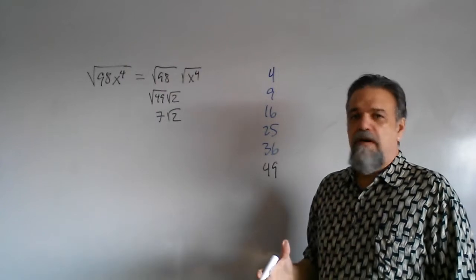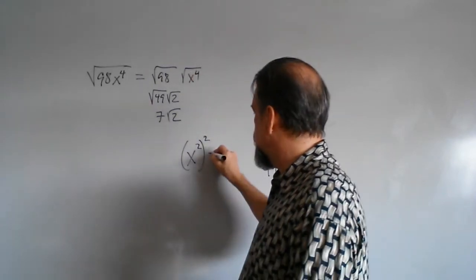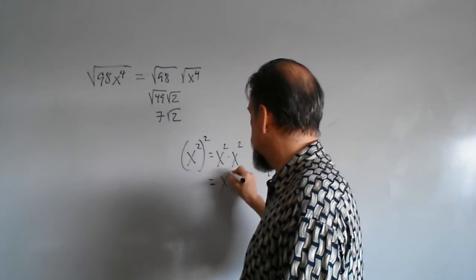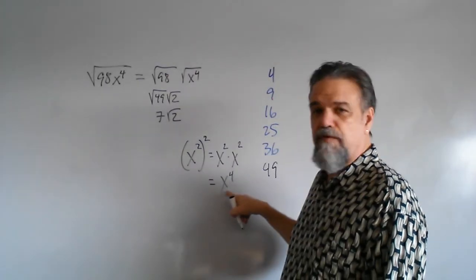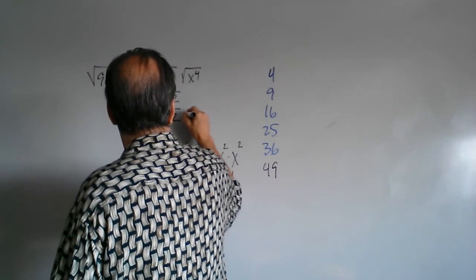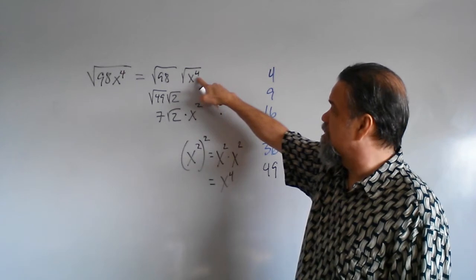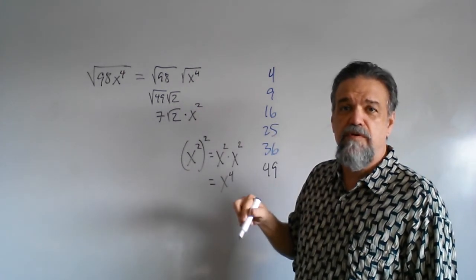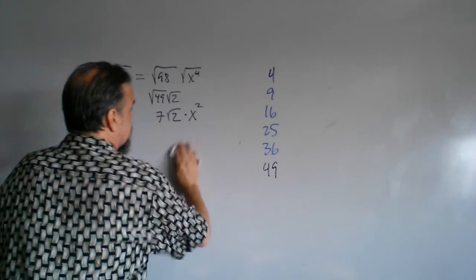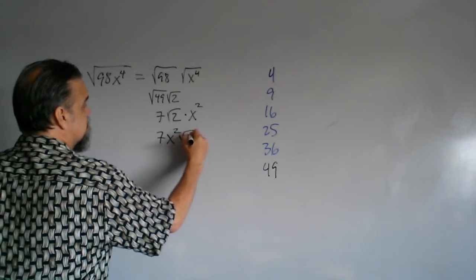Now I get to look at the variable part. If you think about it, x squared squared is x squared times x squared — you just add up those exponents — which is x to the fourth power. If x squared squared is x to the fourth, then the square root of x to the fourth must be x squared. So I just took the exponent and cut it in half. That's what you do when you take the square root of something that is to an even power — you just cut it in half. So this gives us 7x squared times the square root of 2.